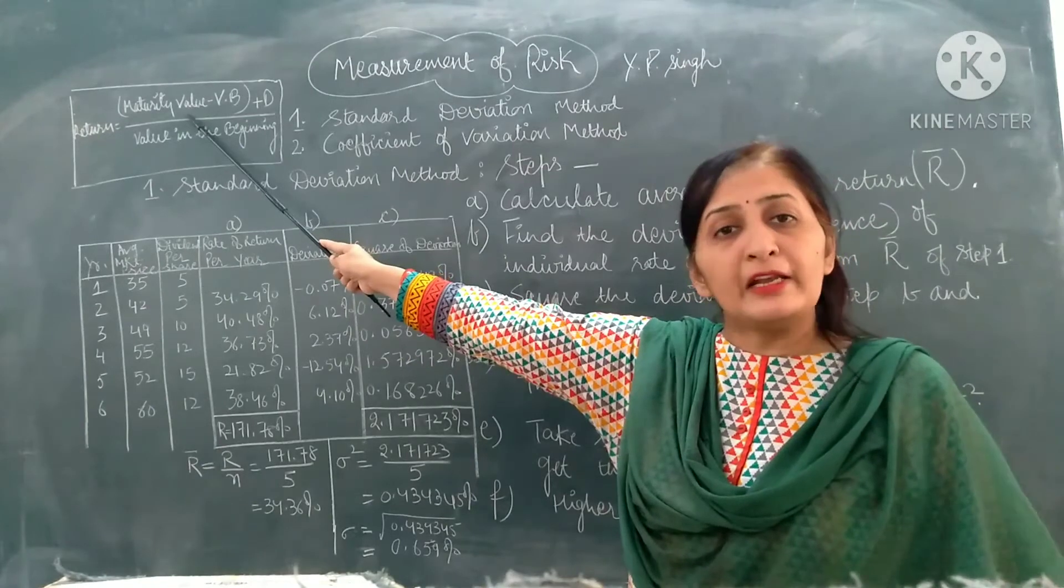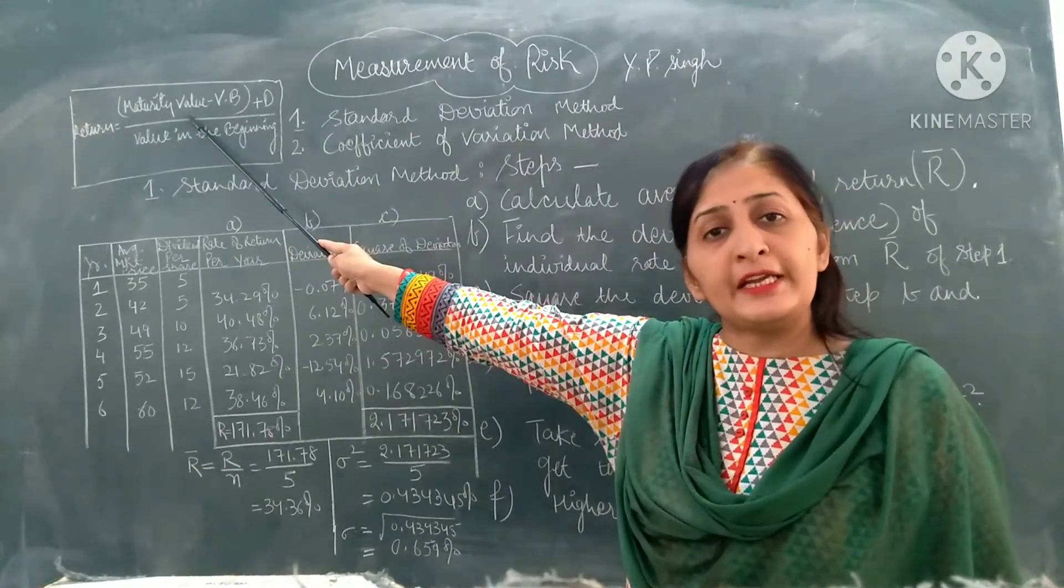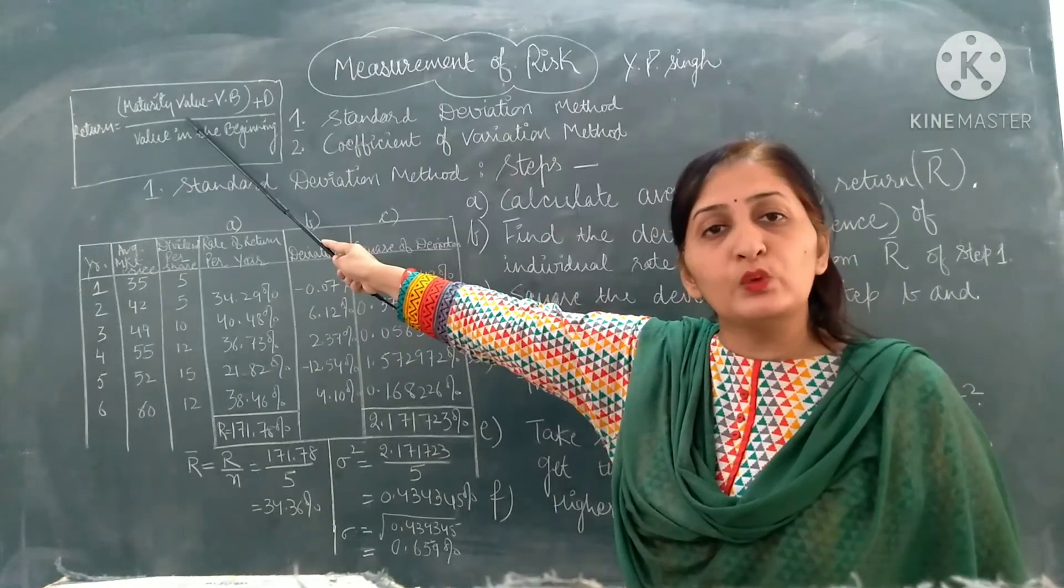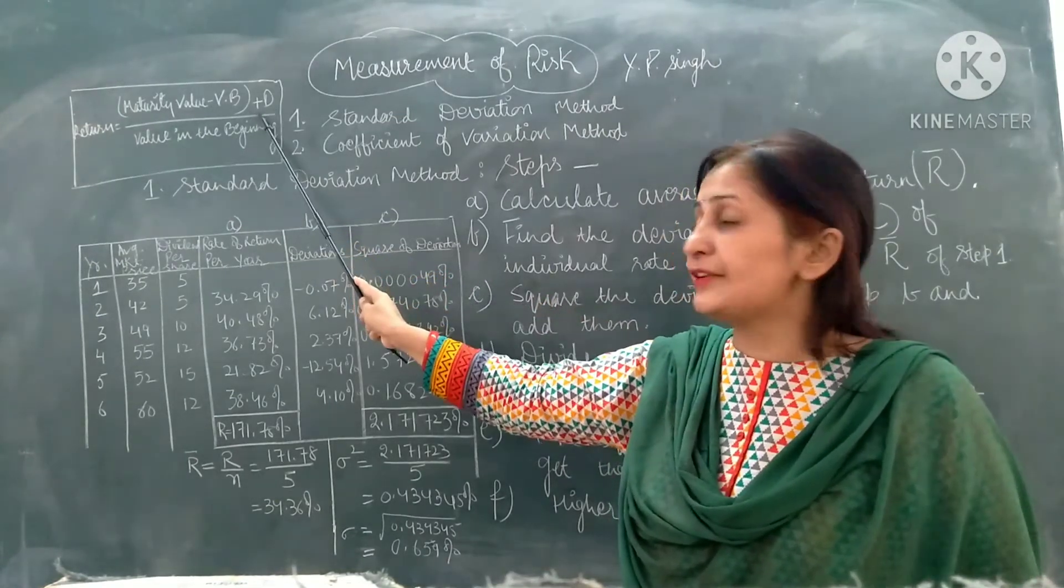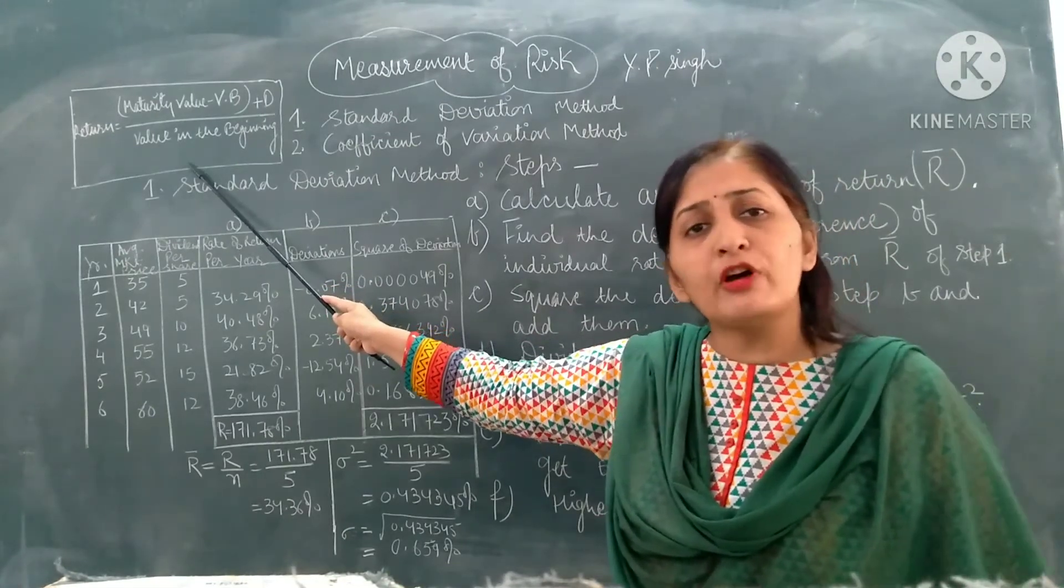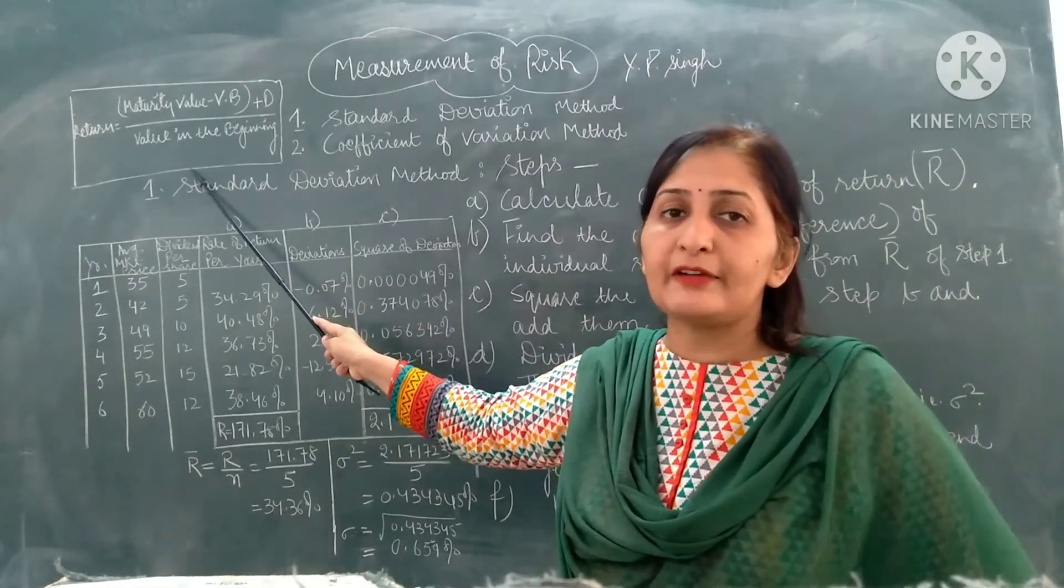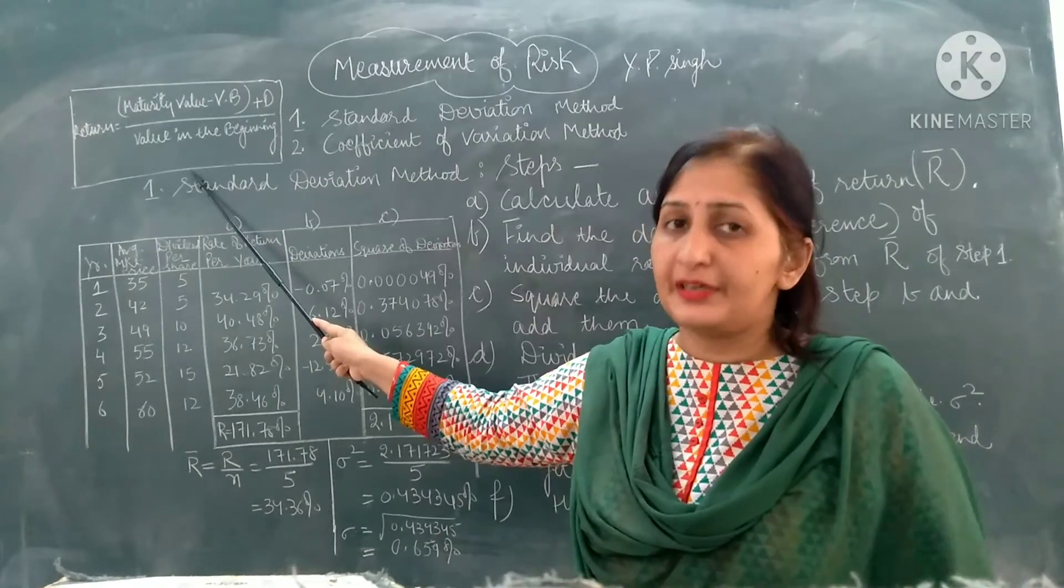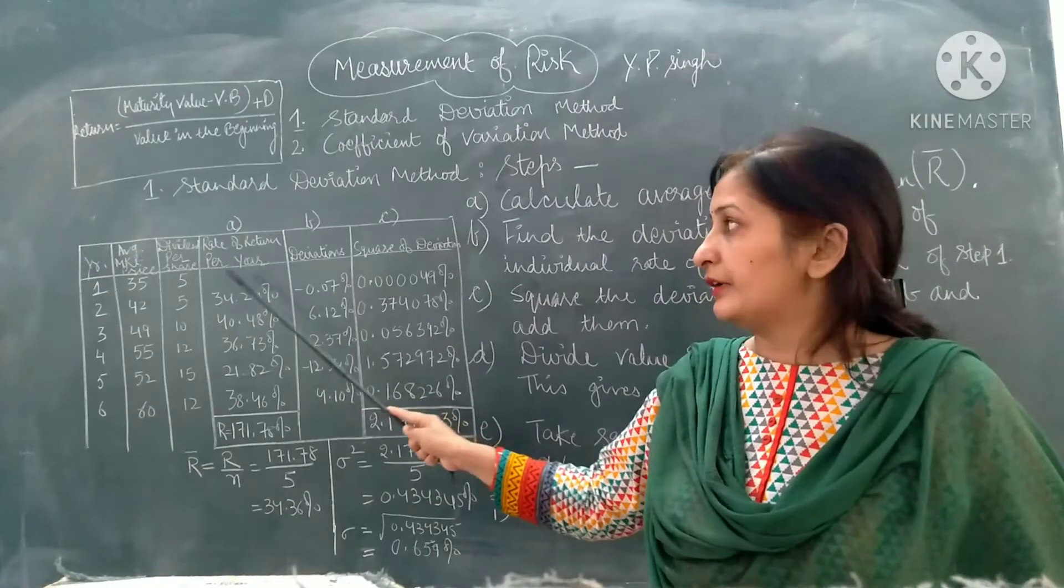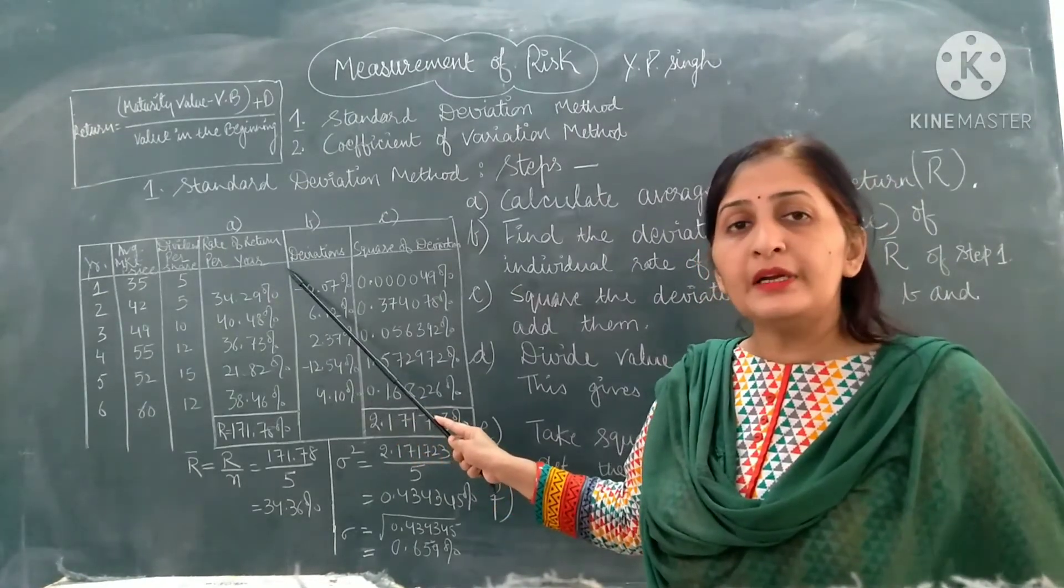That is to say, value of return will be calculated for a particular time period with the help of the formula: maturity value minus value in the beginning plus dividend, divided by value in the beginning. So in this example, we will calculate the rate of return for each particular year.